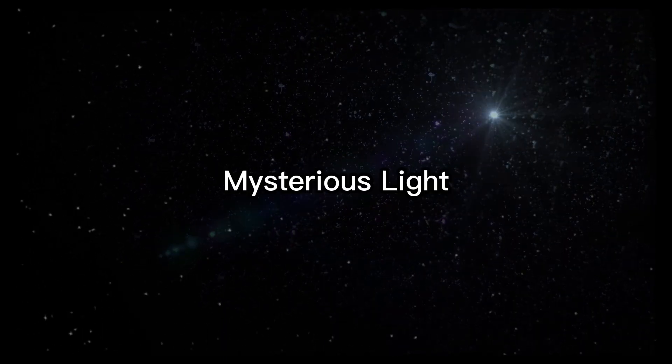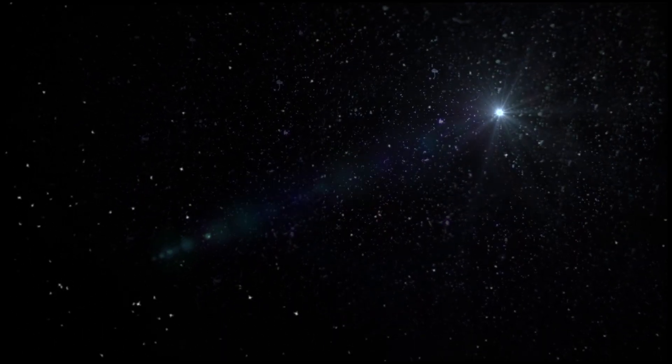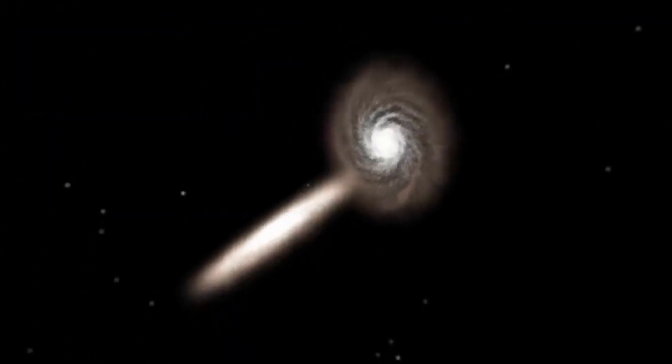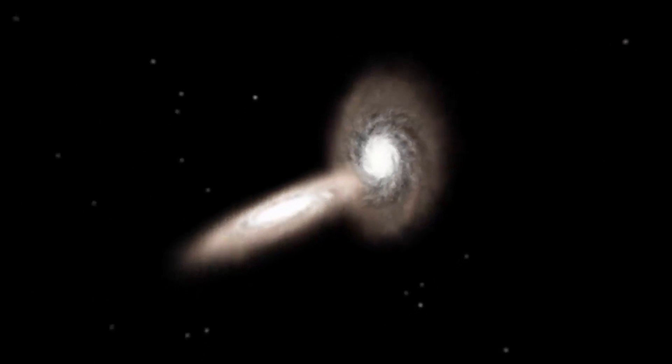Scientists have discovered a mysterious light in space that was initially invisible when observed by the Hubble telescope. The light is coming from two merging galaxies, but the source of the light is not yet clear.